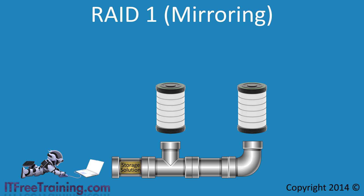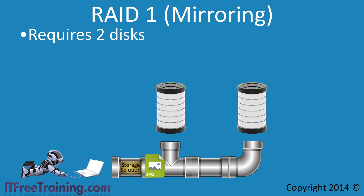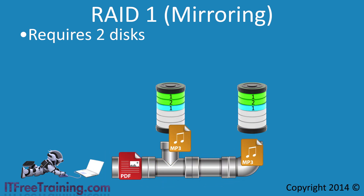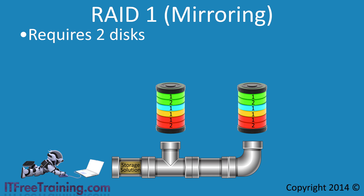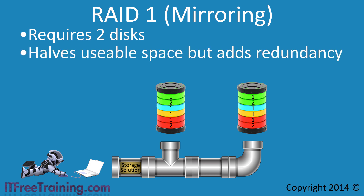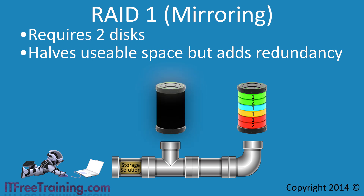The next RAID level is RAID 1, also known as mirroring. RAID 1 requires two drives. As files are written, an identical copy is stored on each drive, making two copies in total. Since both drives hold the same information, this effectively reduces the usable space by half. Even though this effectively doubles the cost of drive space, it offers redundancy. If the first drive were to fail, the same exact information is available on the second drive — it becomes a simple matter of replacing the failed drive and copying the data from the surviving drive.